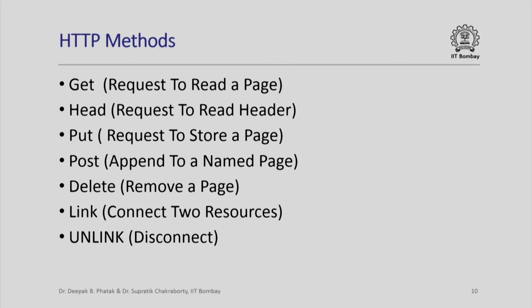There are various methods — or functions, in our language — associated with HTTP. The GET method is a request to read a page; the HEAD method is a request to read a header. Similarly, a request to store a page is the PUT method; to append to a named page is the POST method; to remove a page is the DELETE method. LINK is a function to connect to resources and UNLINK is for disconnecting. We can conceptually treat all these methods as equivalent to functions provided in the HTTP and HTML framework.